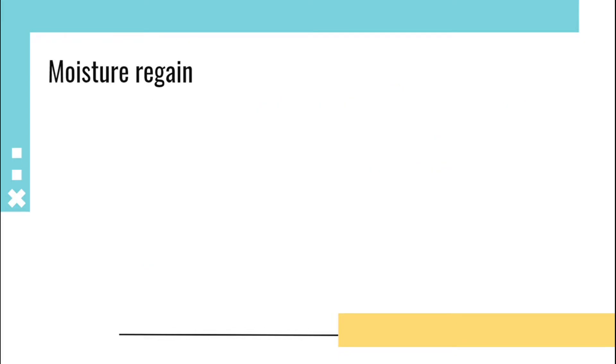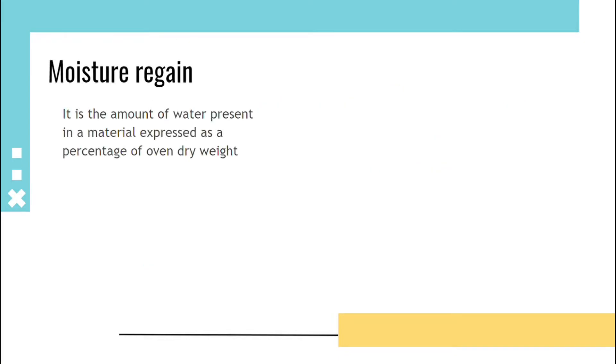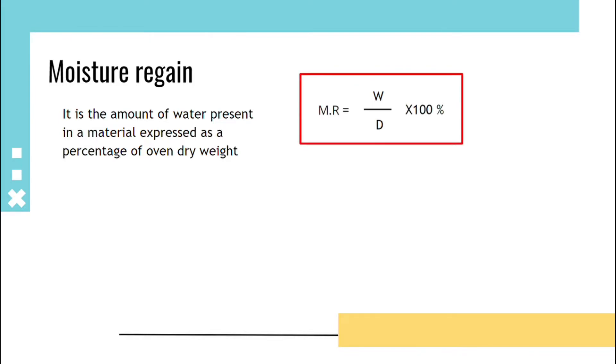Moisture regain is the amount of water present in a material expressed as a percentage of oven dry weight. That is: Moisture Regain = (amount of water / oven dry weight) × 100.